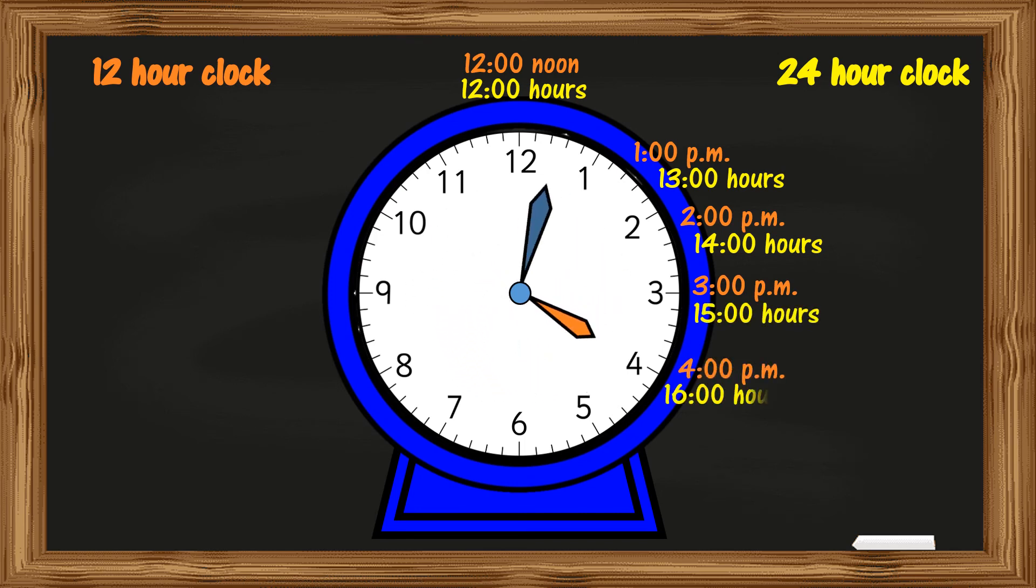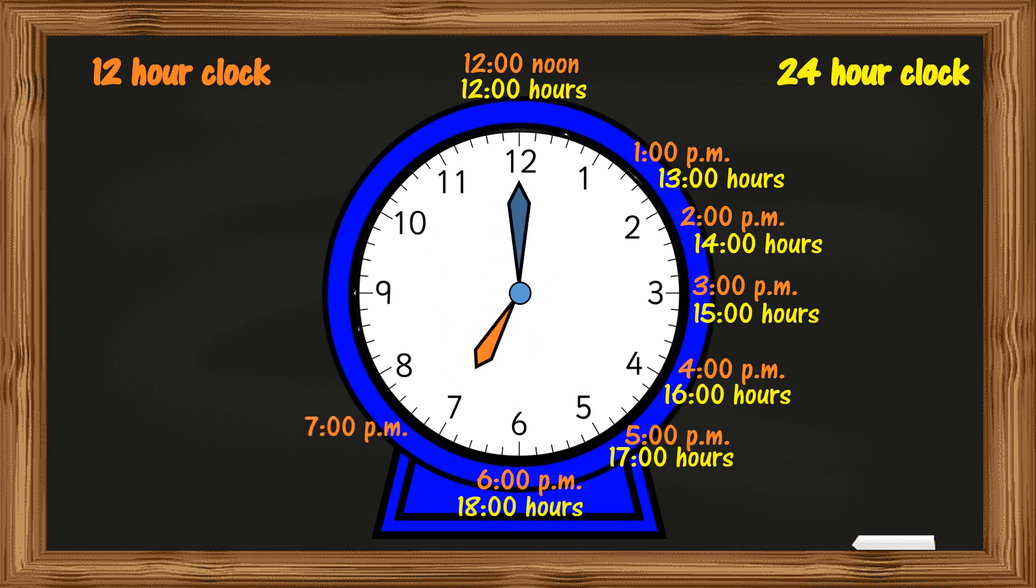4pm is 1600 hours. 5pm is 1700 hours. 6pm is 1800 hours. 7pm is 1900 hours.